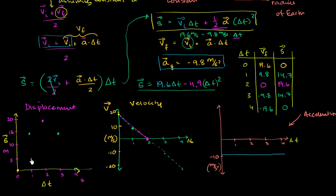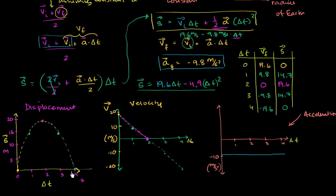If you plot displacement versus time, you get a downward-opening parabola. The velocity graph is a downward-sloping straight line, and the acceleration is constant. The velocity decreases at a constant pace the entire time because the acceleration is constant and negative — giving a slope of negative 9.8 meters per second squared.